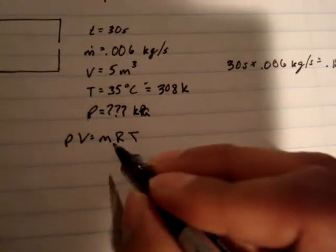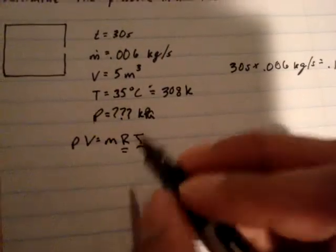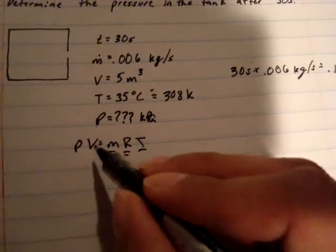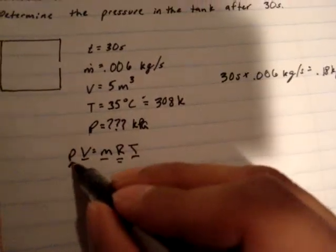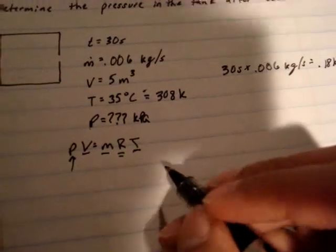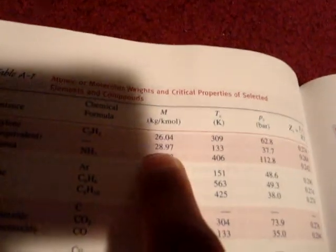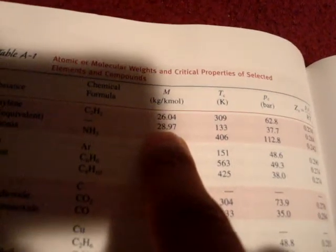Now, the next thing we need to figure out is R, because we got temperature, we got the mass, we have volume, so we need to solve for this. And to find R, we'll go ahead and go to this table over here, table A-1, and we're going to look at air, which is 28.97 kilograms per kmole.